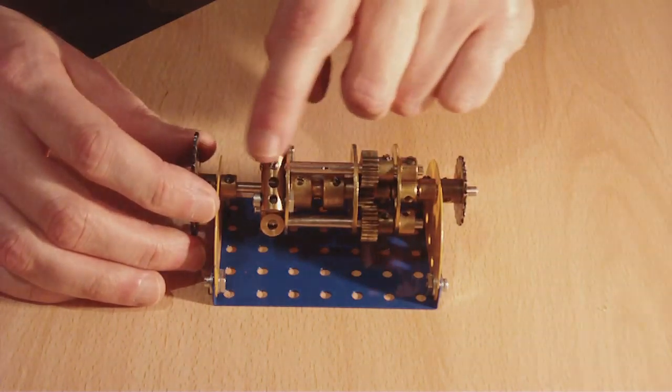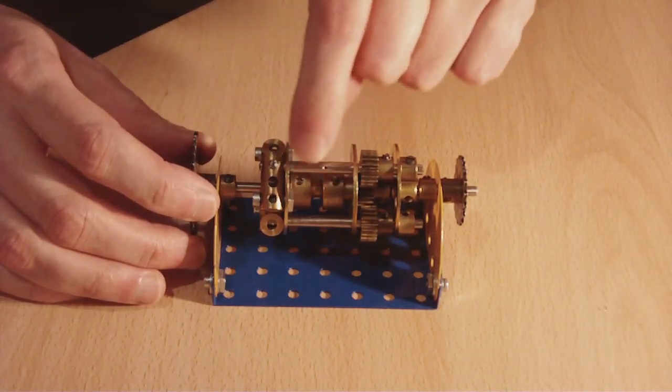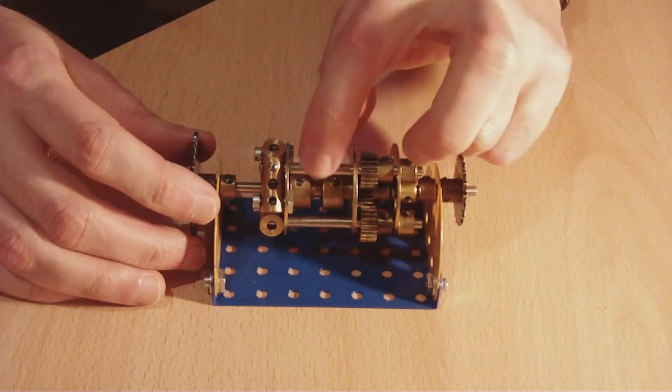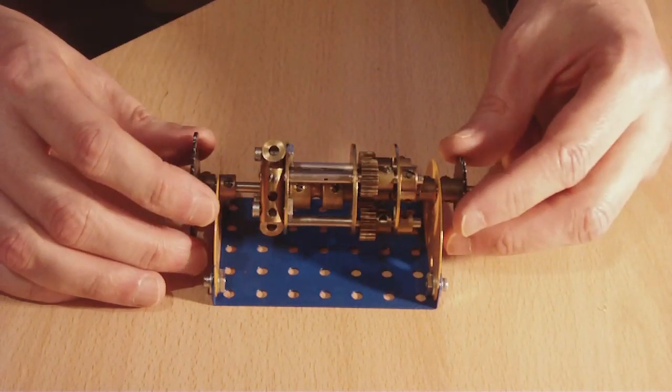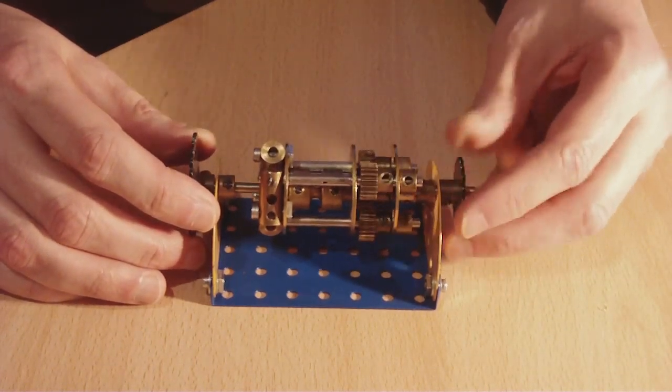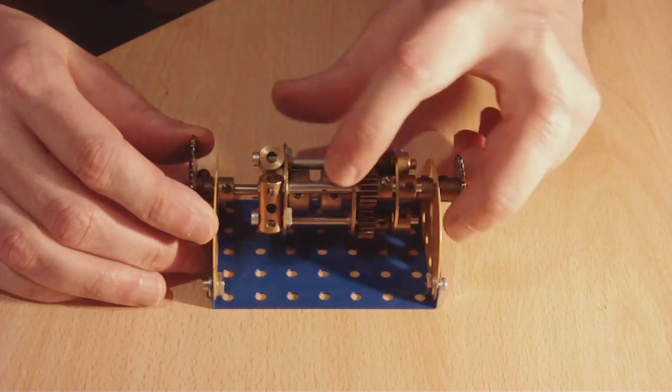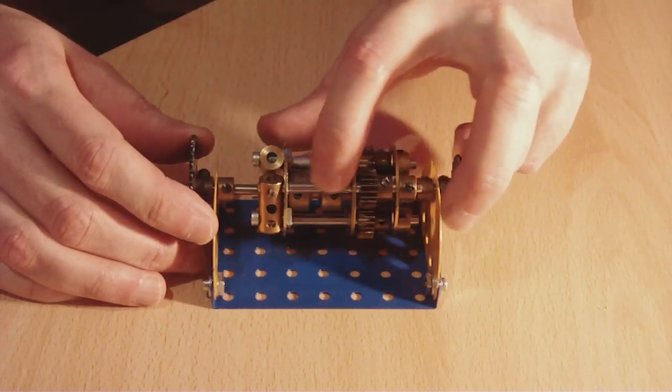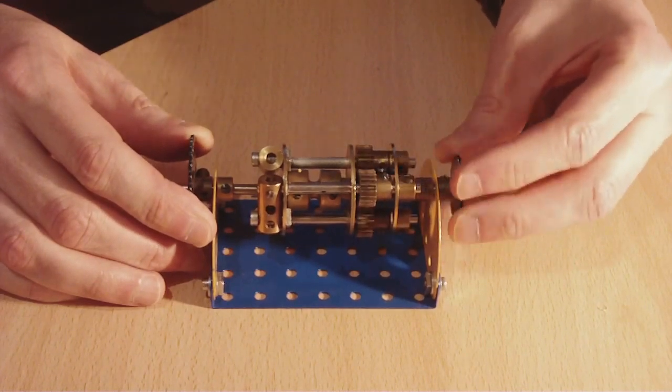There's a rod there and there's a rod over here also. This is a rod connector which is effectively a friction device. So when it's under load, this rod actually turns inside the rod connector, stopping the drive.